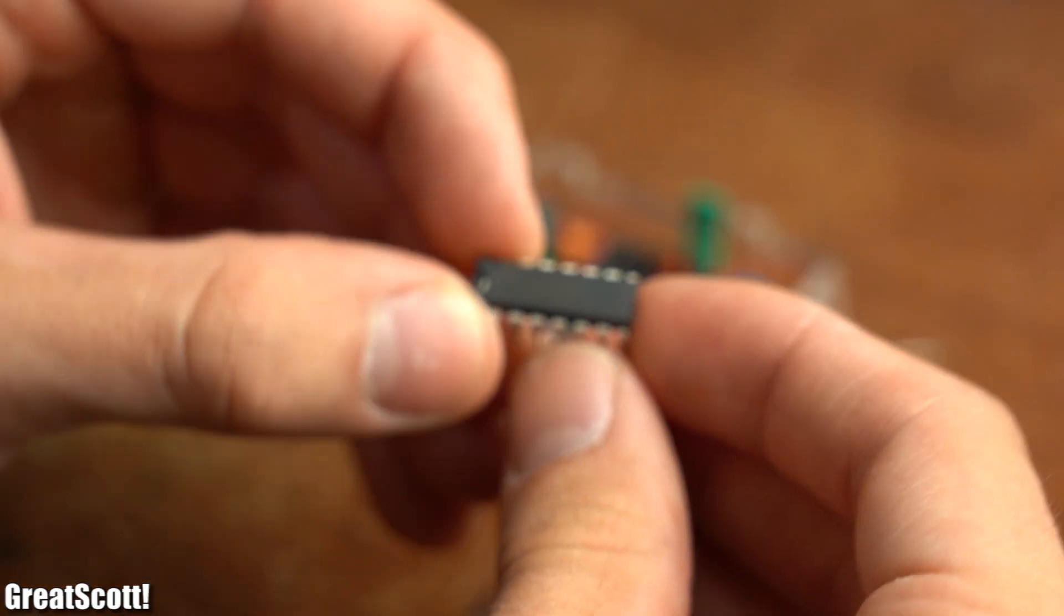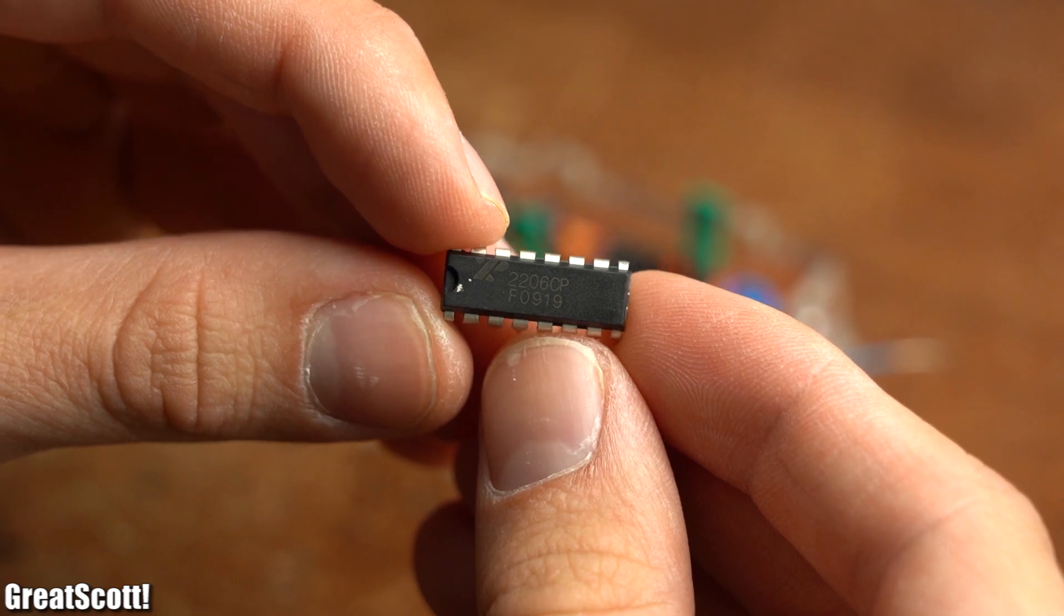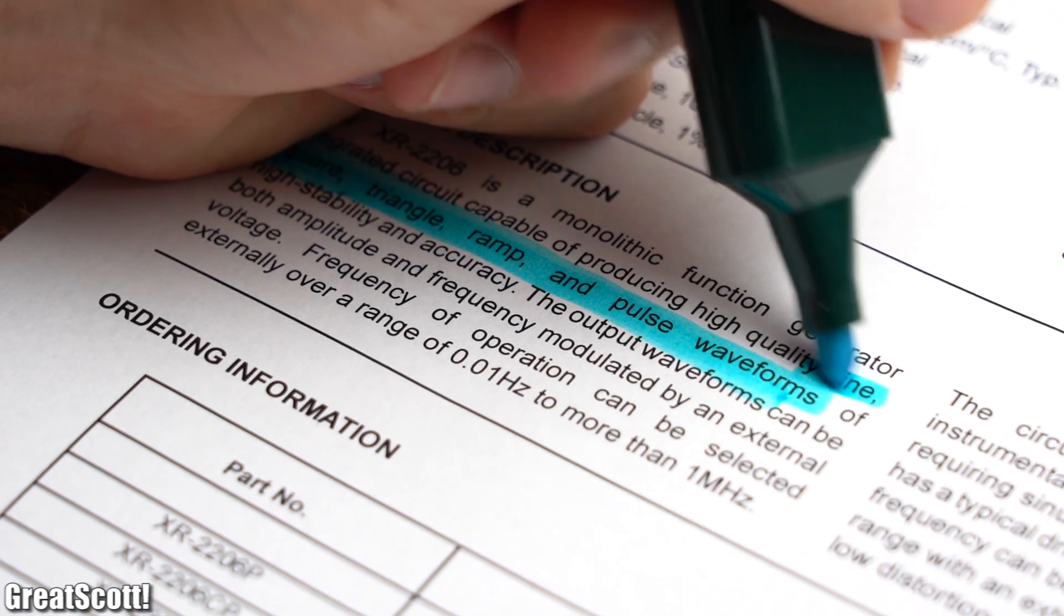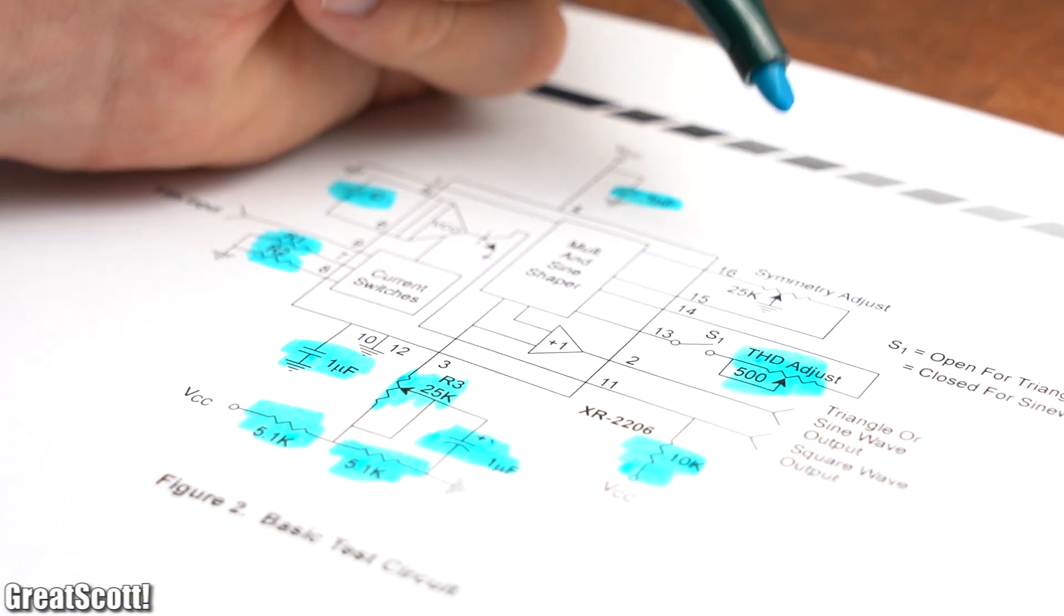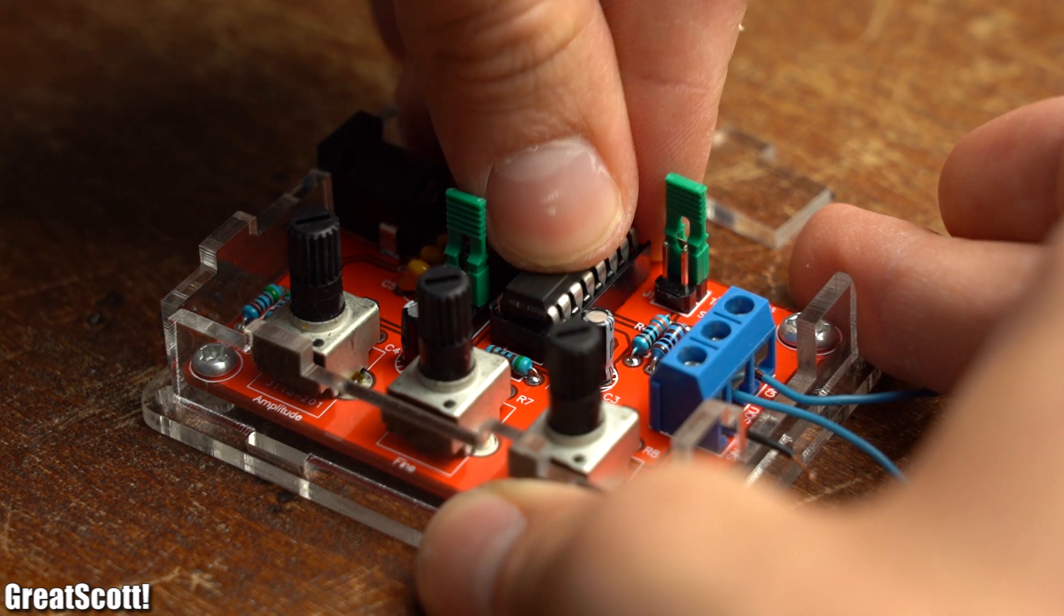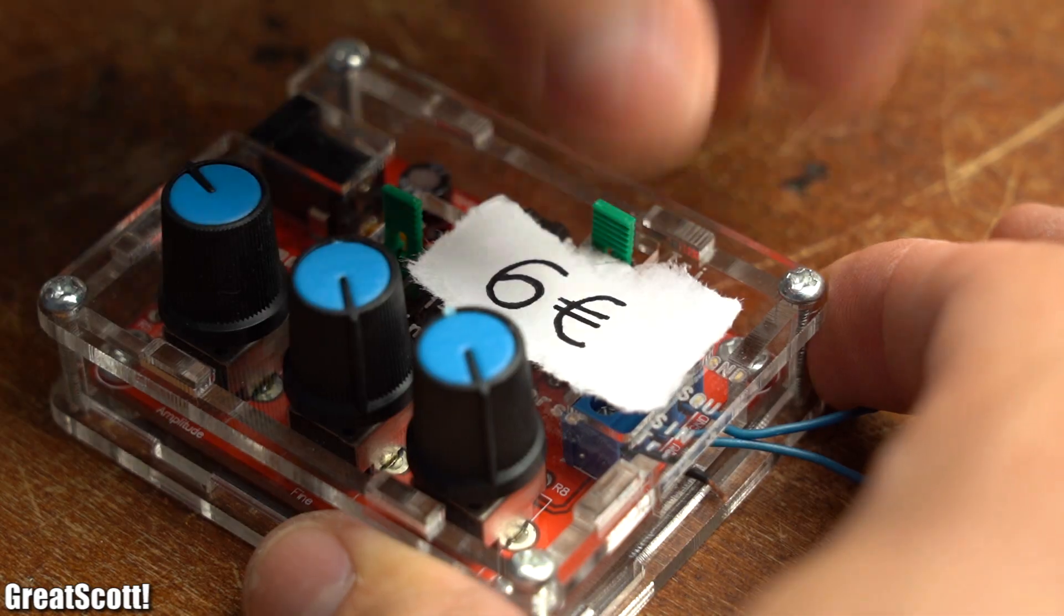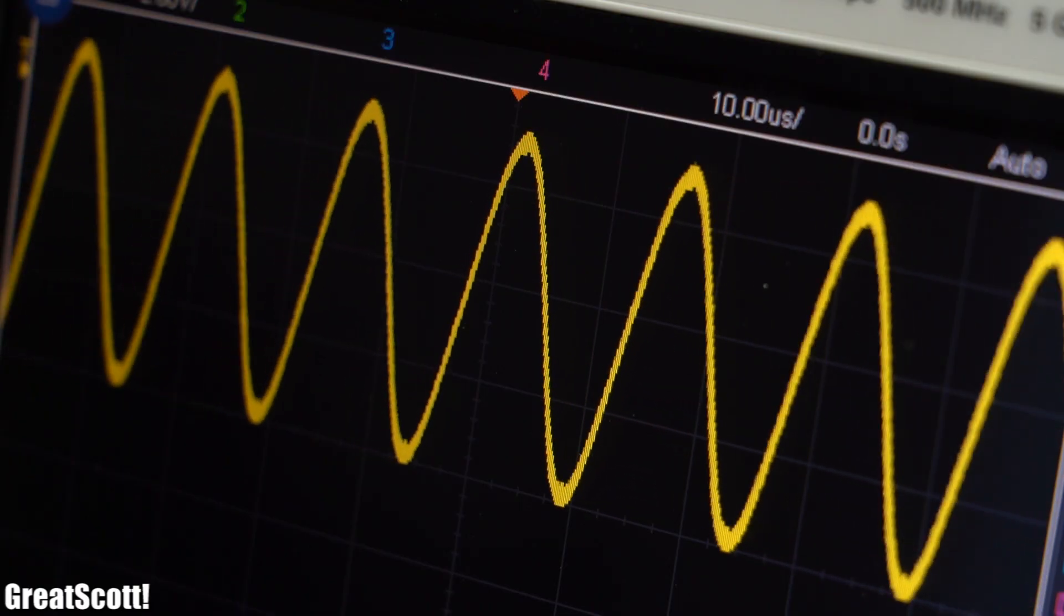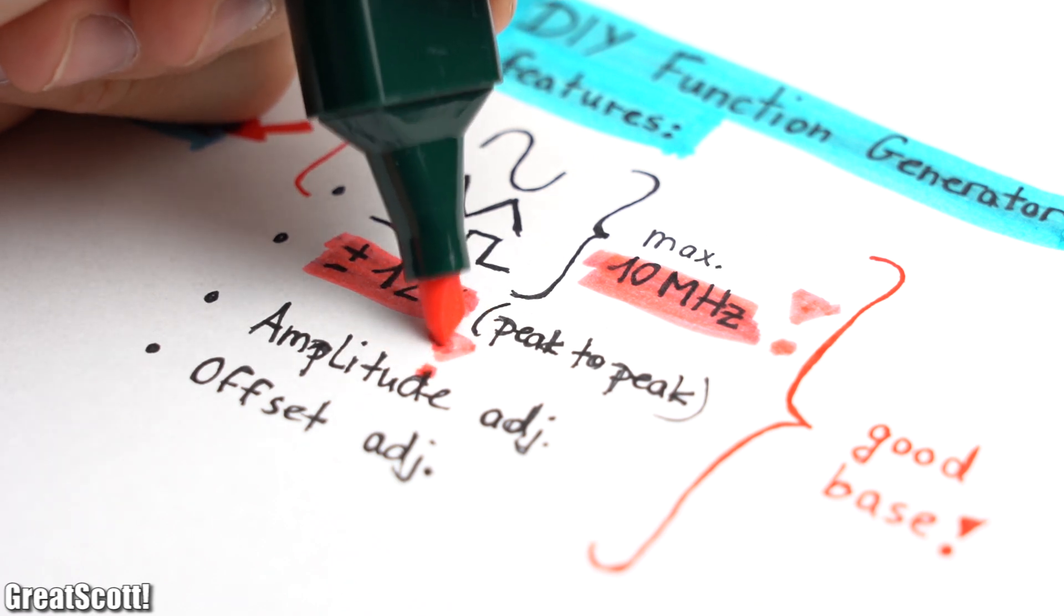But if you desperately want to stay analog, then you can always get yourself an XR2206 function generator IC. It provides a square wave and triangle slash sine outputs with a frequency of up to 1 megahertz and only requires a few complementary passive components. And if you want to be lazy like me, you can even get a complete kit based around them for only 6 euro. And let me tell you that it works really well for its price. But we're still not even close to the features I said at the beginning of the video.